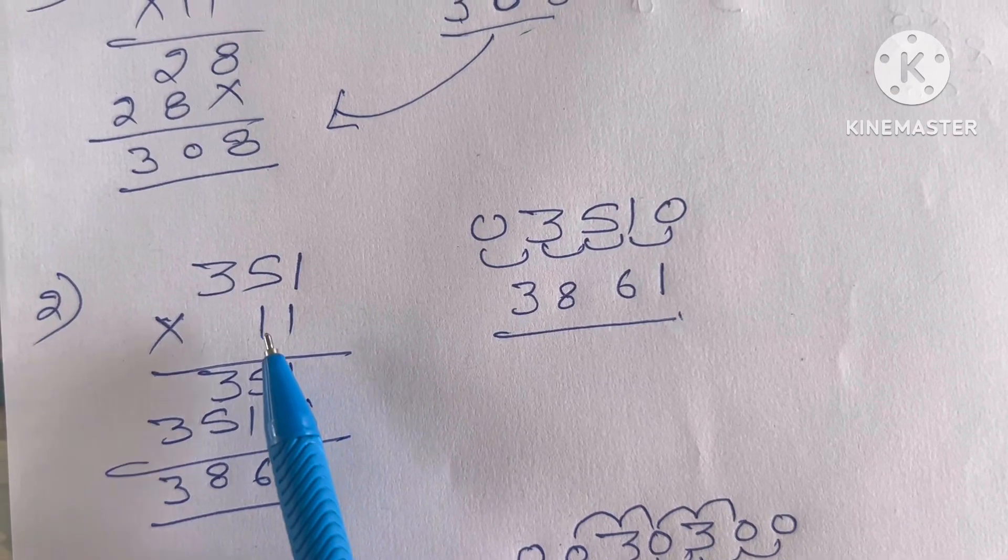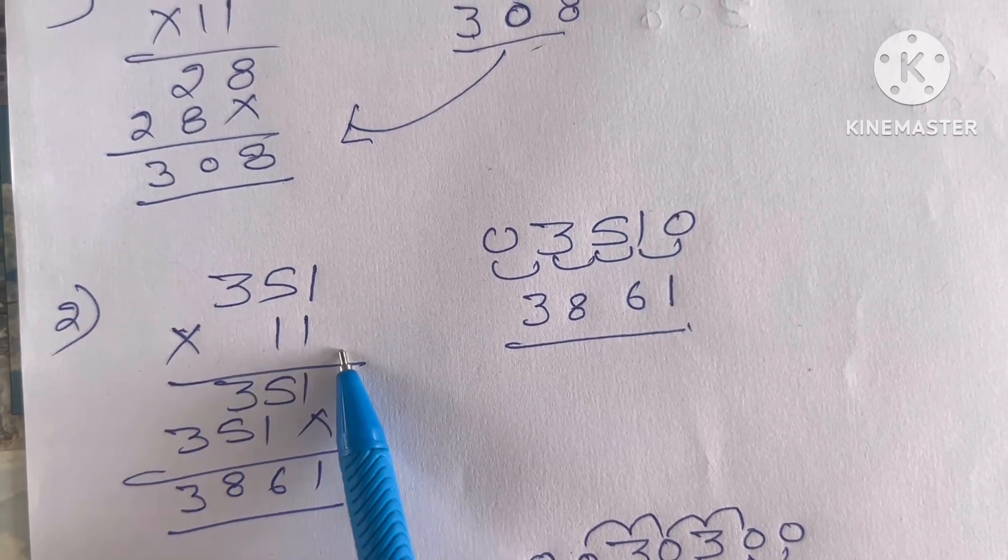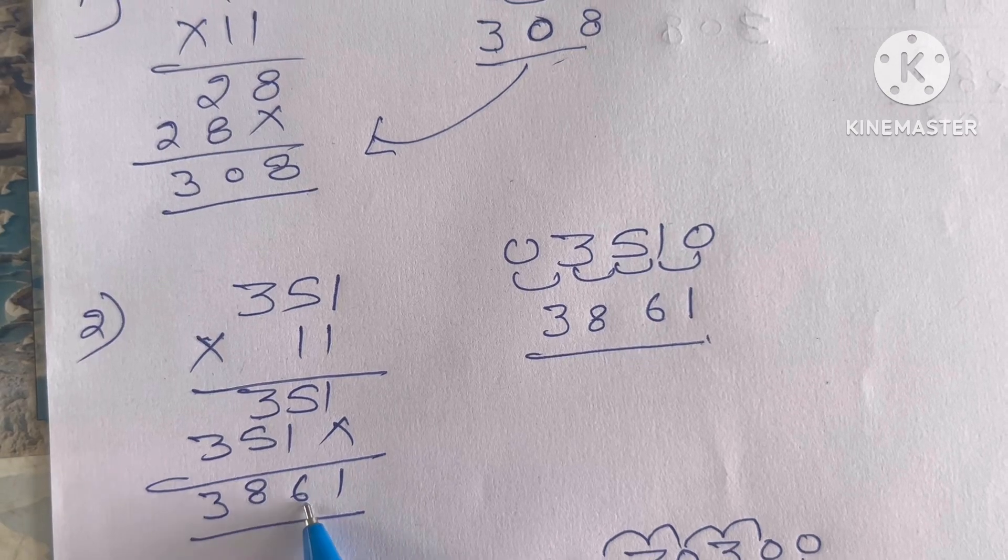Similarly, if you have to multiply 351 by 11, answer comes out to be 3861.